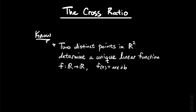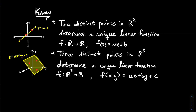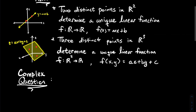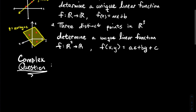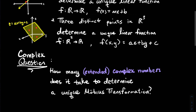The function's formula is f(x) = mx + b. In other words, two distinct points determine a line. Similarly, three distinct points in space determine a plane. And what we want to do is try to answer a question like this in the context of Möbius transformations.